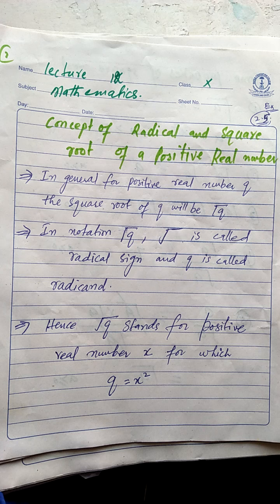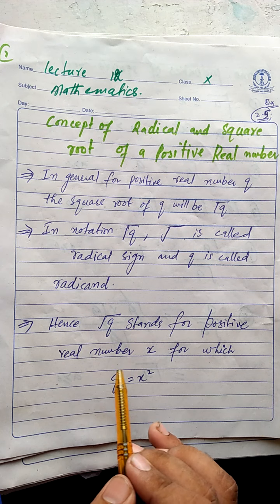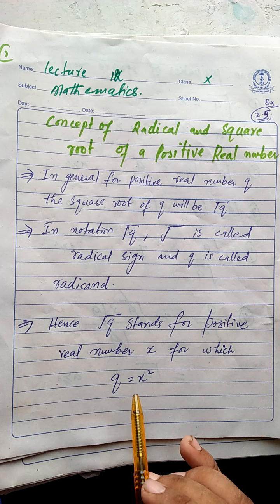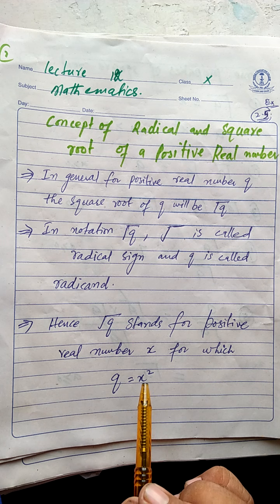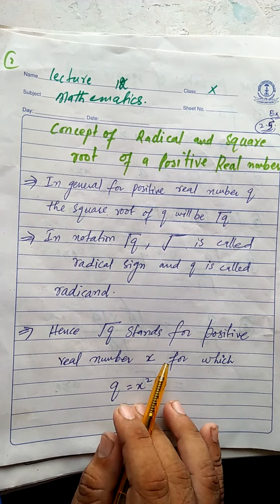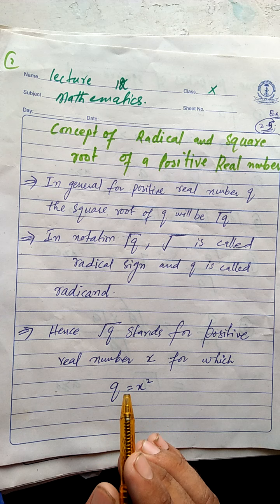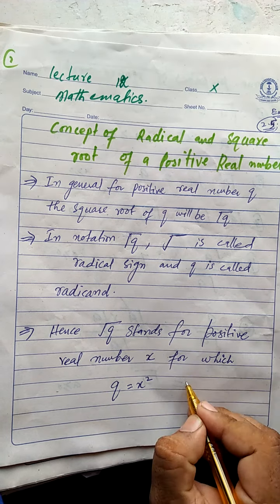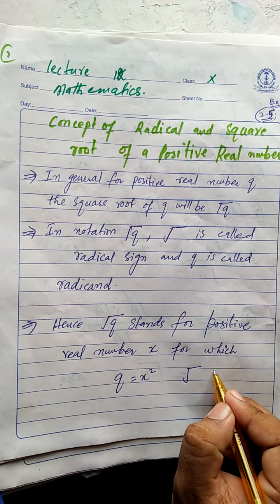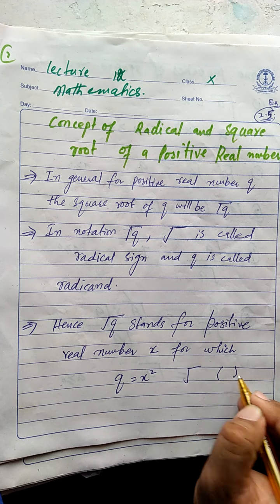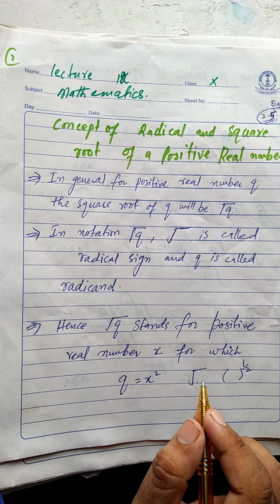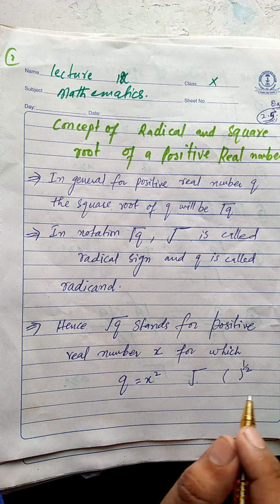Radical q is equal to x means that if we square both sides, the square and the one-half power cancel, giving us q = x². This is because the radical sign is equivalent to a power of one upon two, so squaring it cancels that power. This is the first property of square root.